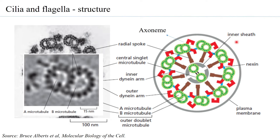In the schematic structure, the outer gray lining is the plasma membrane — the final covering of the flagella and cilia. The internal structure is called the axoneme. At the periphery are nine doublets; in each doublet, the A microtubule has 13 protofilaments and is complete, while the B microtubule is incomplete with 11 protofilaments, sharing two with the A microtubule.